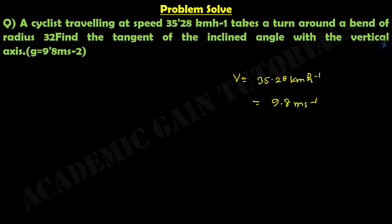The cyclist takes a turn around a bend of radius 32.6 meters, so our radius r equals to 32.6 meters.